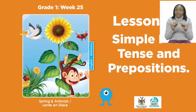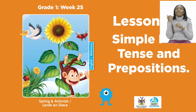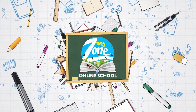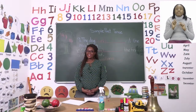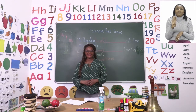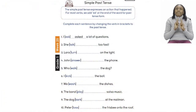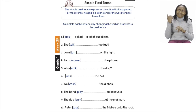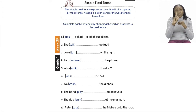For today's lesson we will be talking about simple past tense and prepositions. Now boys and girls, let us start our lesson by going to page 14. On page 14 we are going to be doing simple past tense. The simple past tense expresses an action that happened — meaning all the words we are going to use show that it has already happened. For most verbs we add ED at the end of the word to show the past.